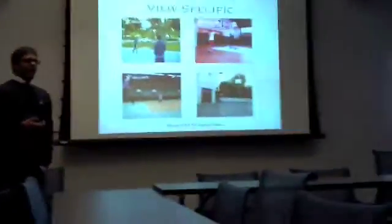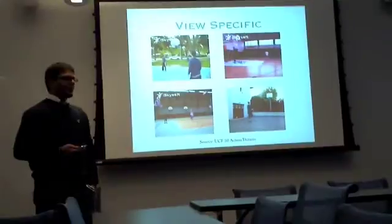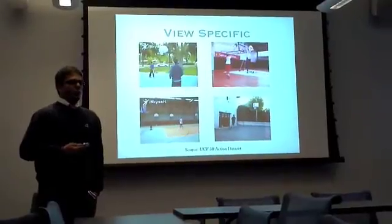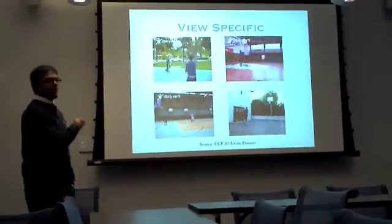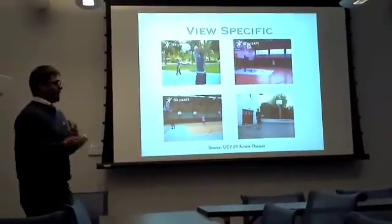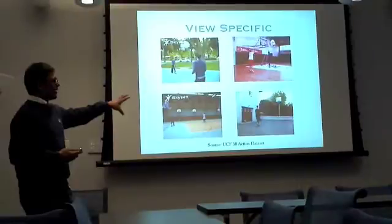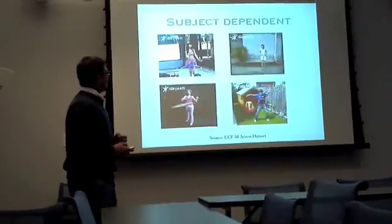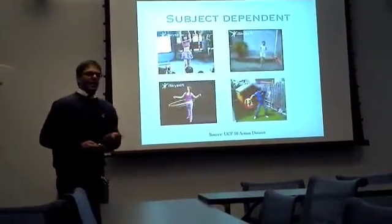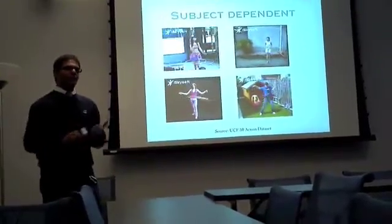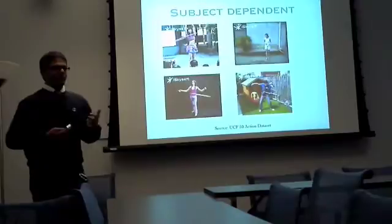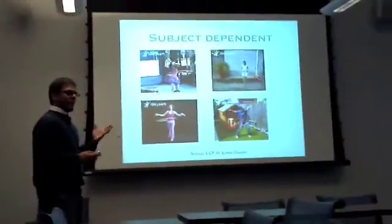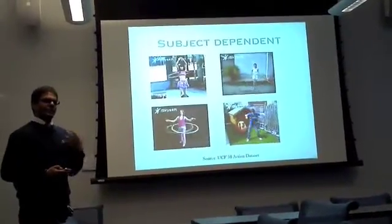Another reason why recognition is difficult is because human actions are very view specific. The same activity looked at from different points of view could probably look very different, and that's evident by this example — you have four examples of people playing basketball, and it's easy for us to recognize that each of these are basketball related videos, but for a machine to do that it's a little more complex. Finally, every action has a different way of being performed by different people — we all have our own styles and methods — and the same action could look surprisingly different when different people perform it.